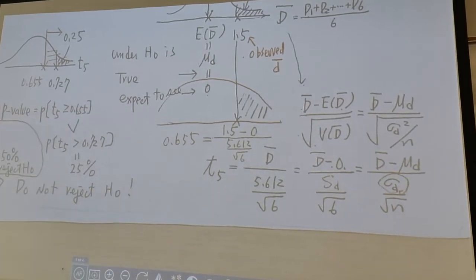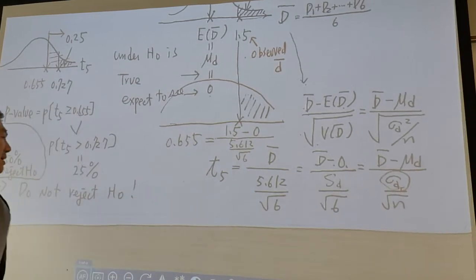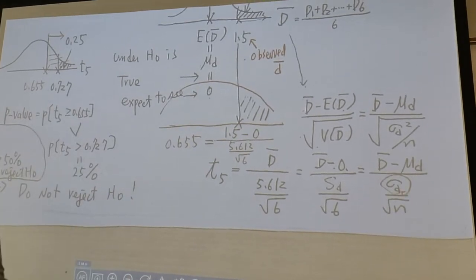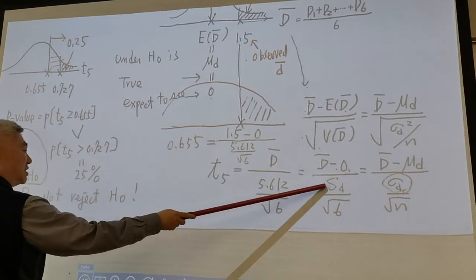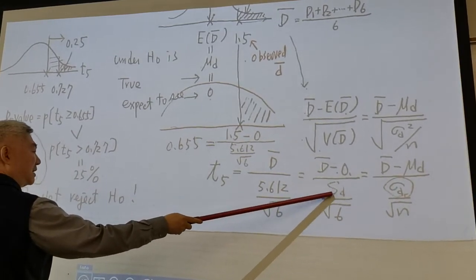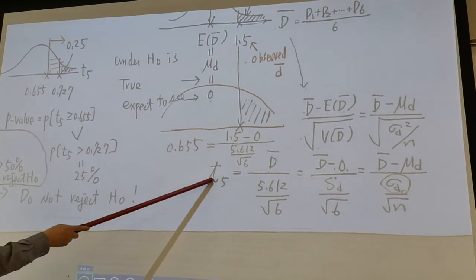But the problem is, if you simplify it, it's σd over square root of n. But in real-life application, we don't know what σd is. So we replace it by sd. After this replacement, it's no longer z, it becomes t.